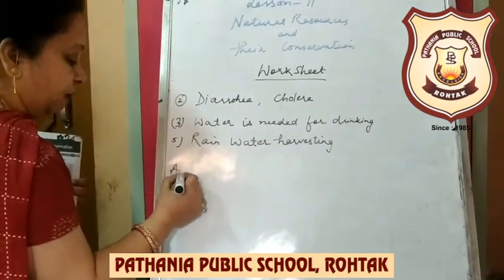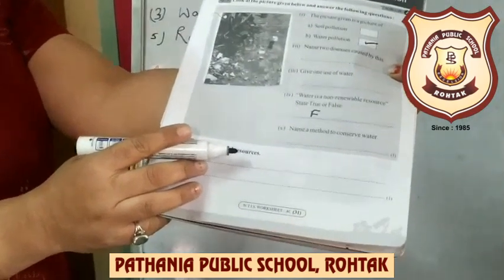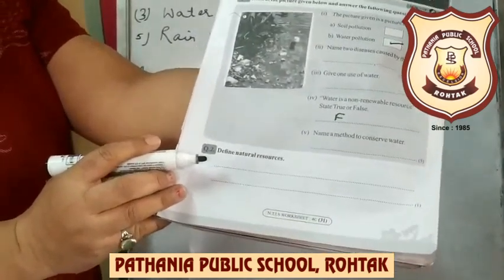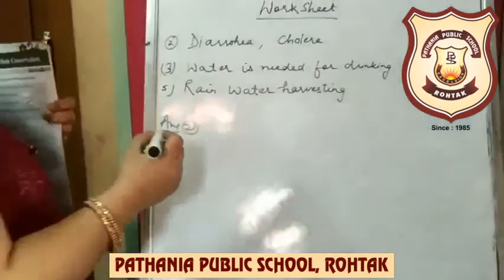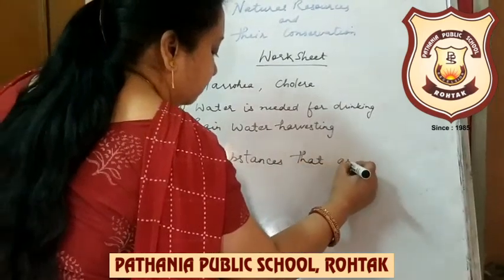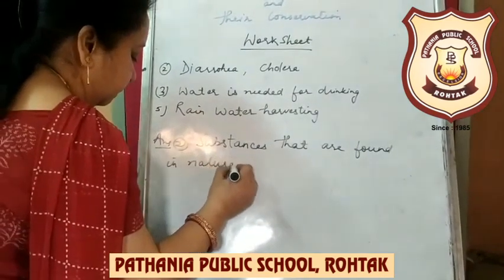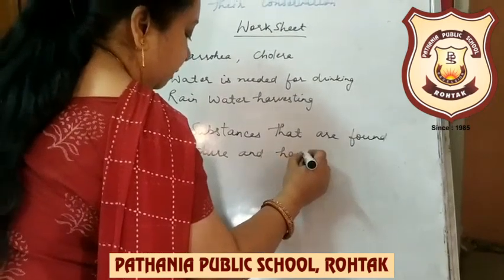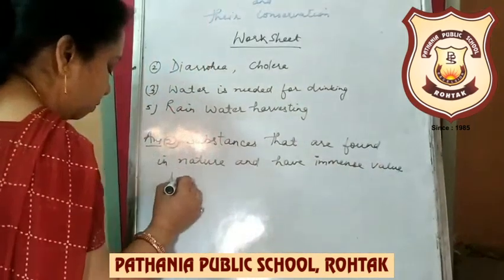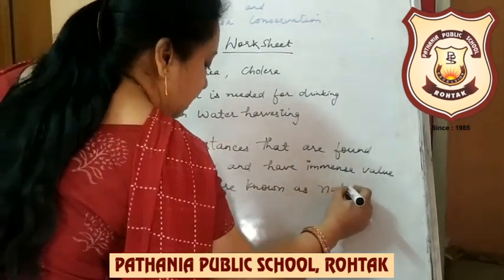Question number two: Define natural resources. The substances that are found in nature and are of immense value to us are known as natural resources. Write down: substances that are found in nature and have immense value to us are known as natural resources.